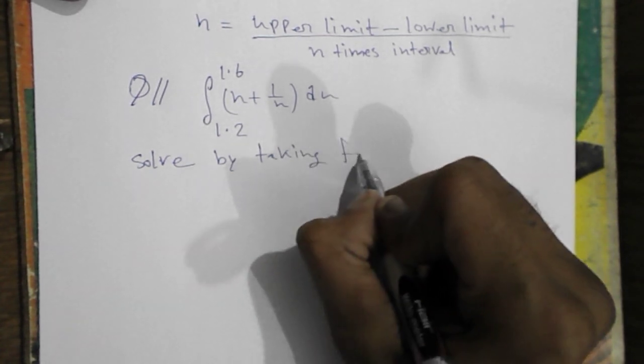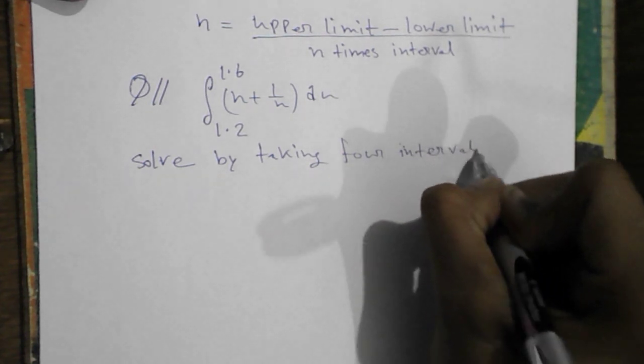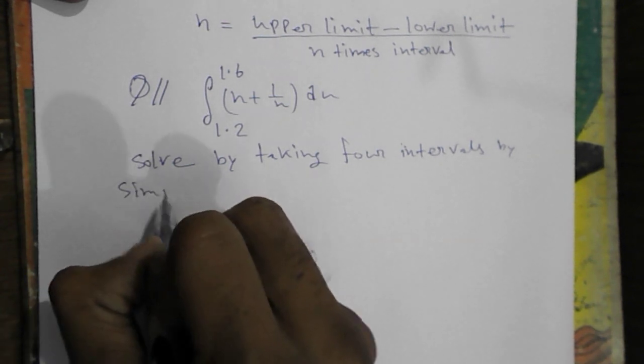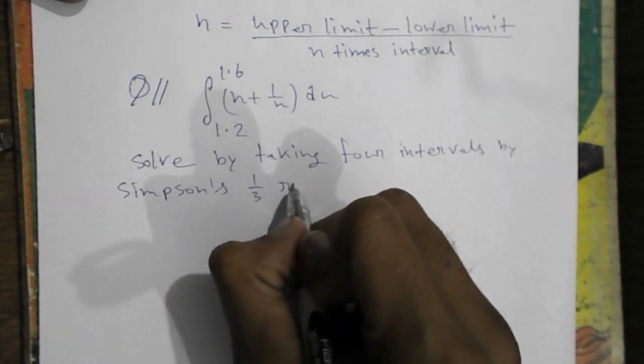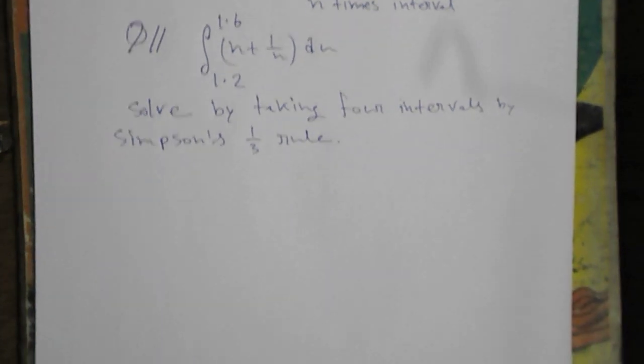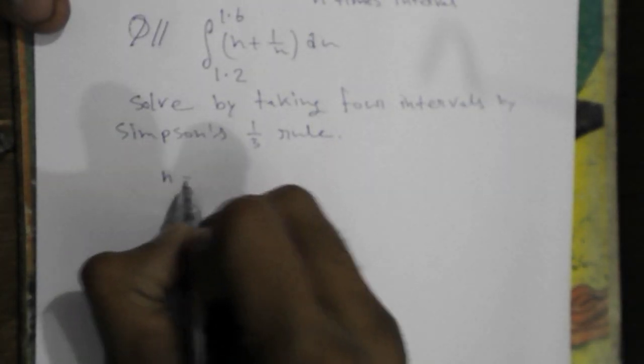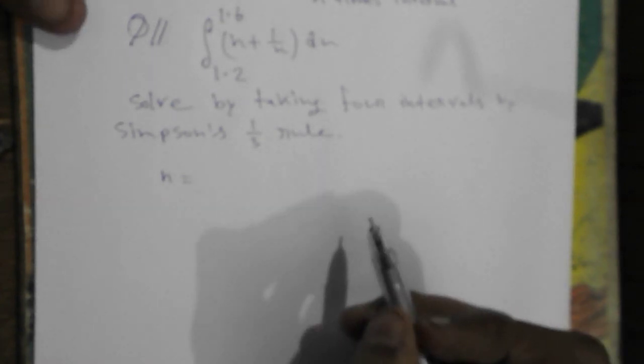So what we will do first? We will first calculate the h. Here we know we have to calculate it by taking 4 intervals.